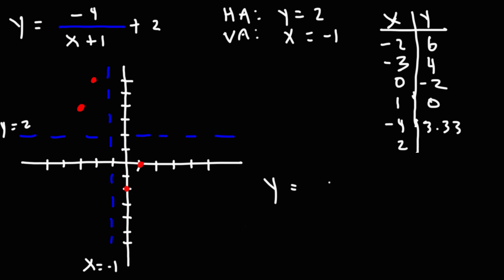Now if we were to plug in positive 2, we would have this. 2 plus 1 is 3. So this is like negative 1.33 plus 2, which is about positive 0.67.